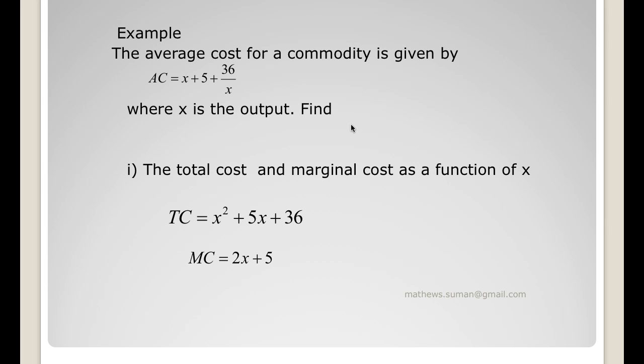The average cost for a commodity is given by: average cost is x plus 5 plus 36/x where x is the output. Find the total cost and marginal cost as a function of x. Now total cost is average cost into x, so that would be x squared plus 5x plus 36. Marginal cost is derivative of the total cost which is 2x plus 5.